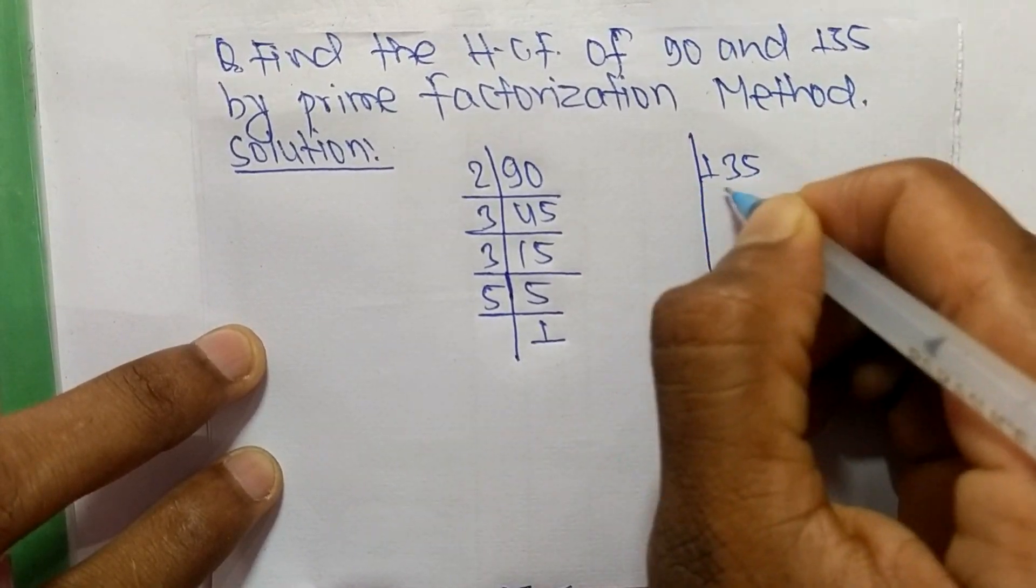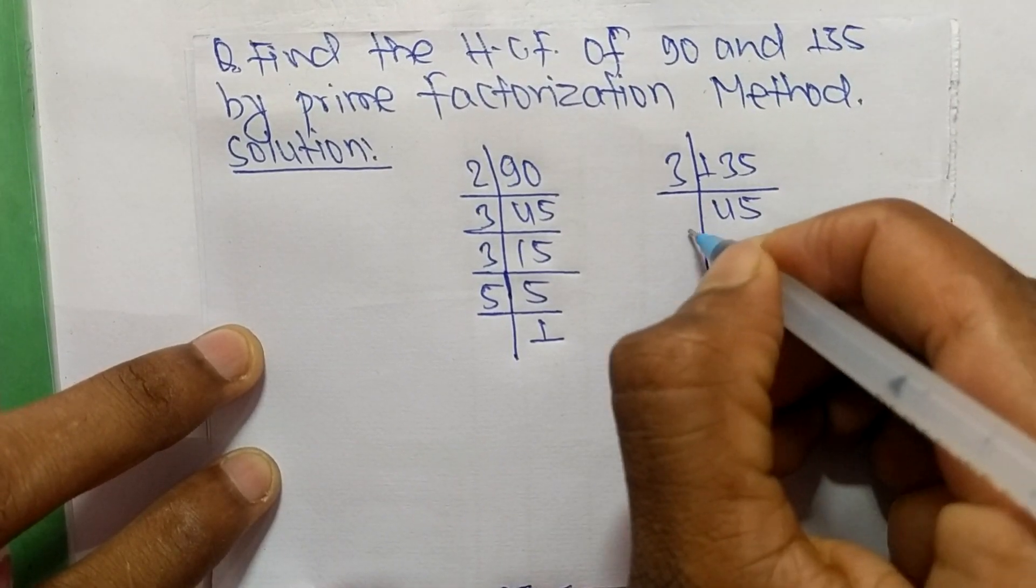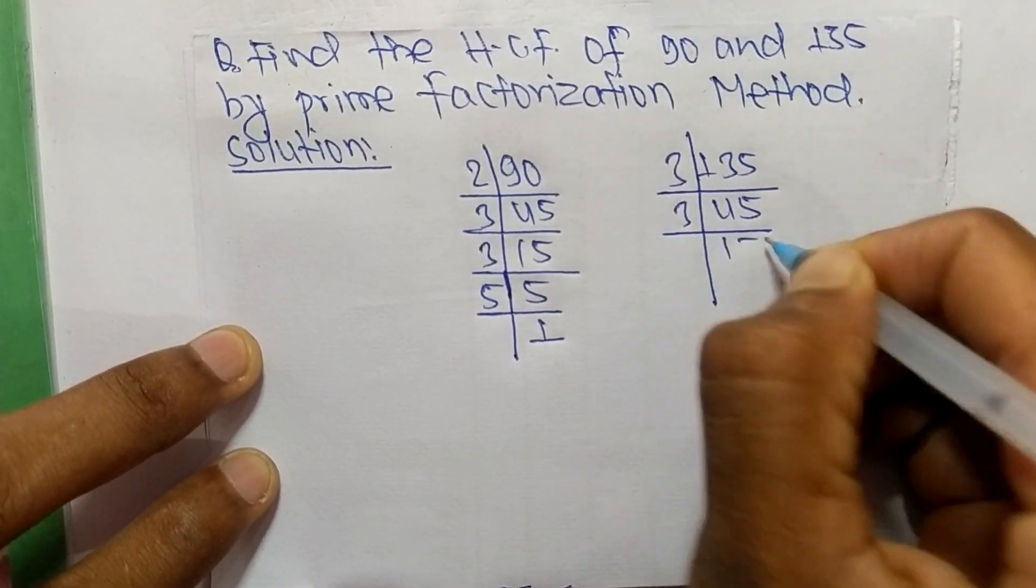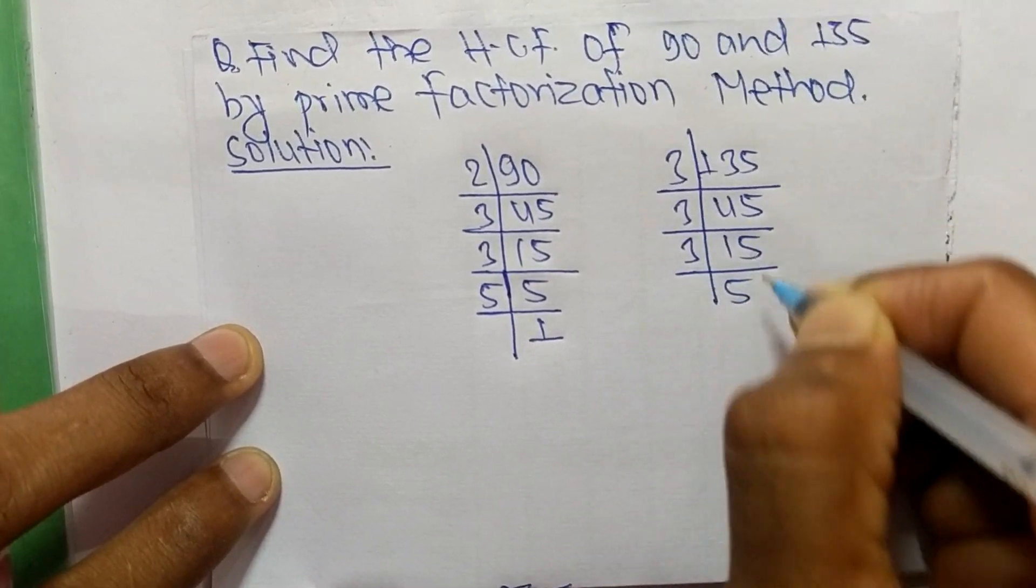Like as, the prime factors of 135 are: it is 3 times 45 mean 135, 3 times 15 mean 45, 3 times 5 mean 15, and 5 times 1 mean 5.